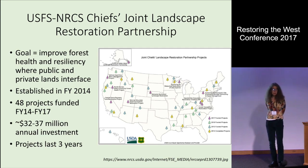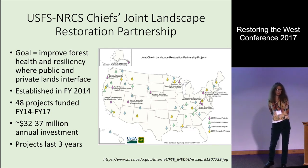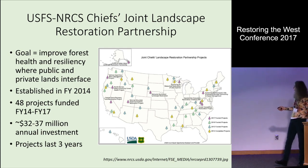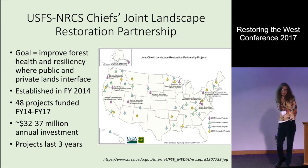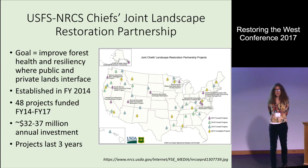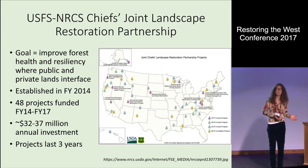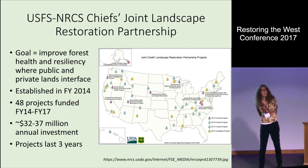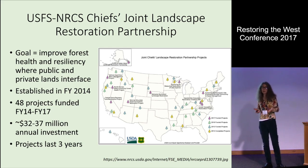The goal of this program is to improve forest health and resiliency where public and private lands interface. It was first established in fiscal year 2014, and to date about 48 projects have been funded across the United States. The agencies are investing anywhere between 32 and 37 million dollars annually, and projects typically last about three years. The Forest Service and the Natural Resources Conservation Service each receive funding — NRCS uses its money to distribute to private forest landowners to help them reduce wildfire risk, while the Forest Service mostly uses it to treat on Forest Service lands.